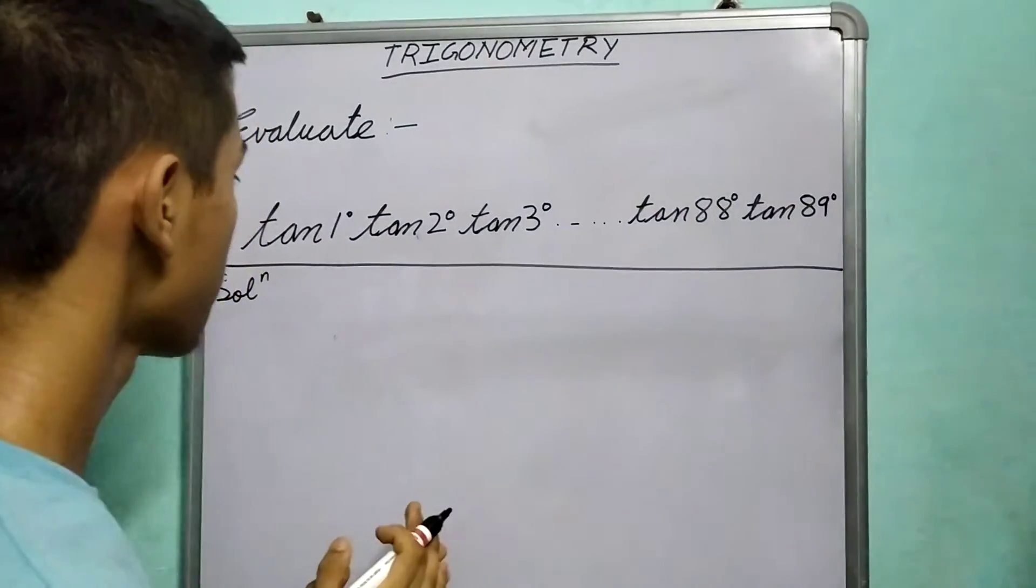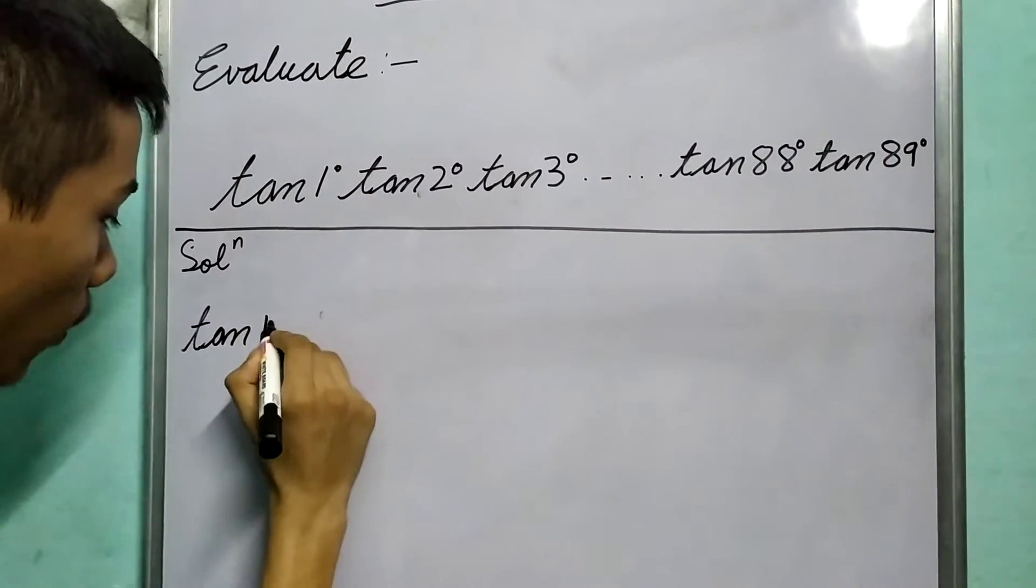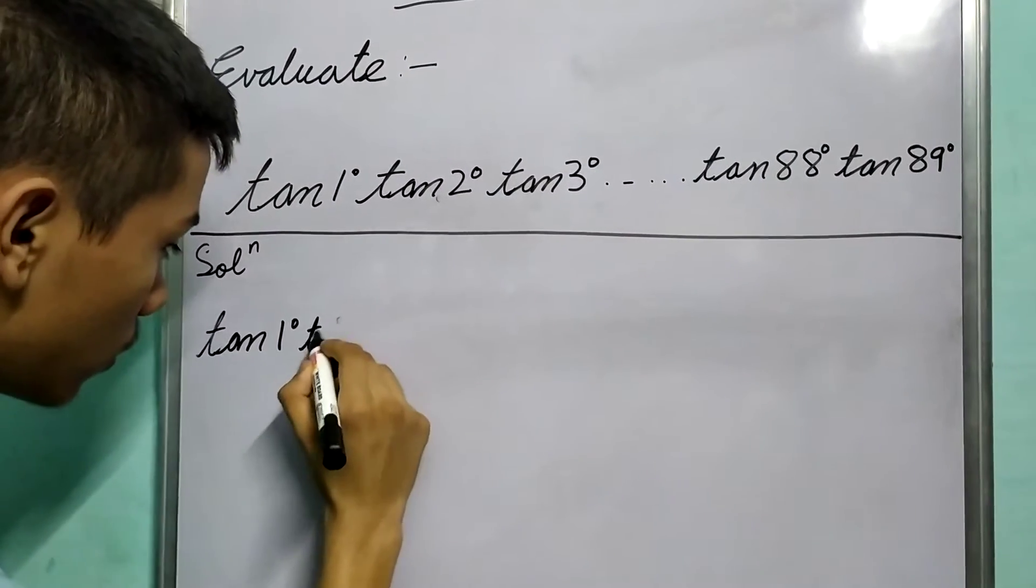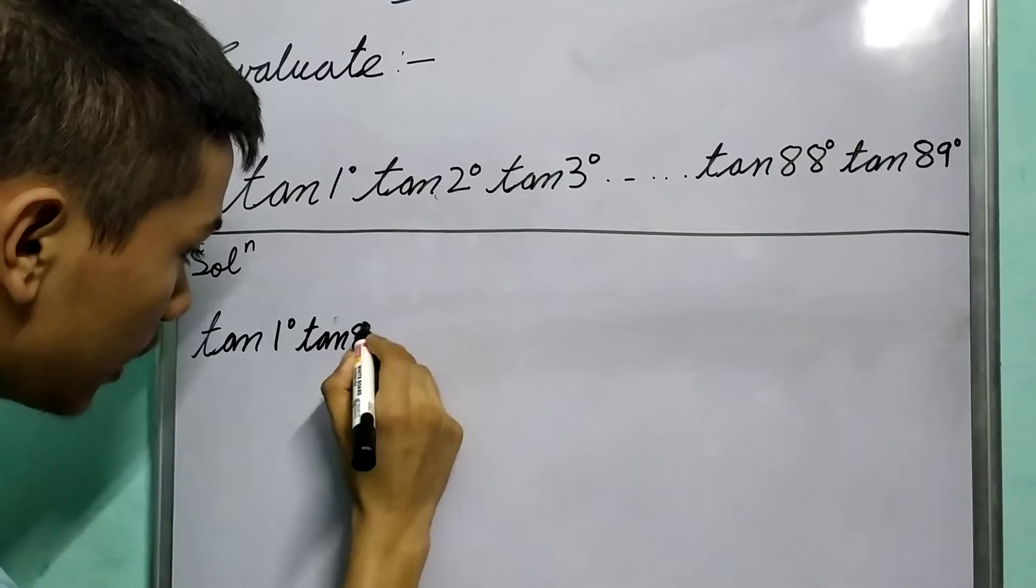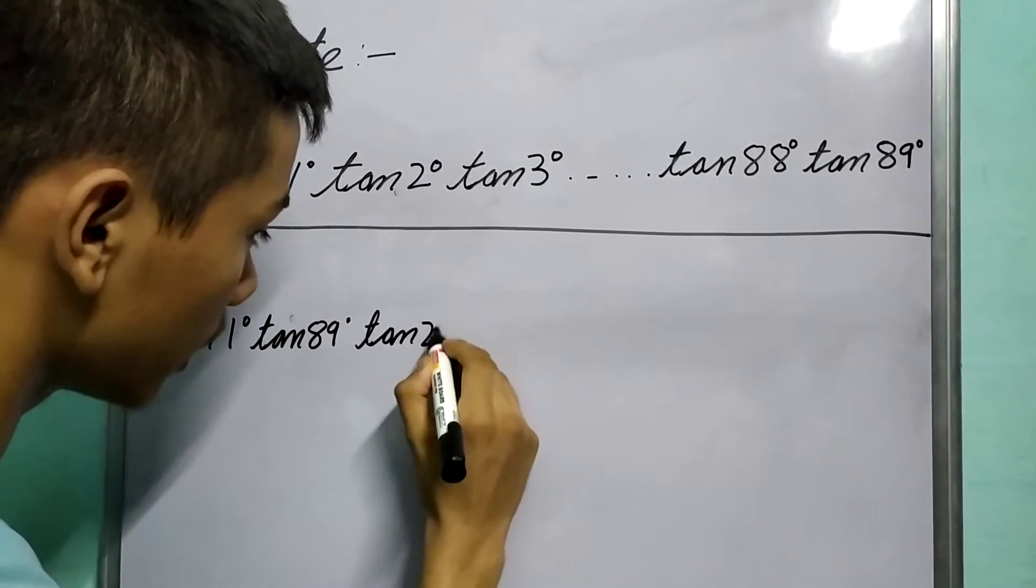Let's just see. Look how I am arranging this. It's something like this: tan 1° · tan 89°, okay, and then we pair tan 2° with tan 88°.